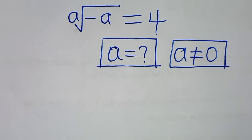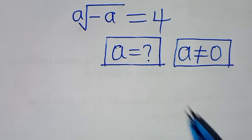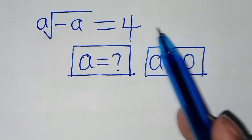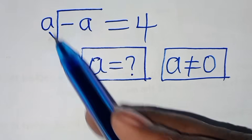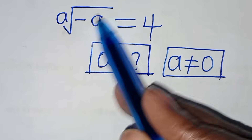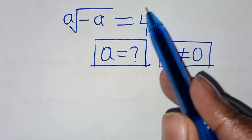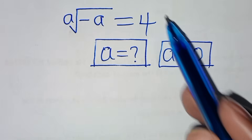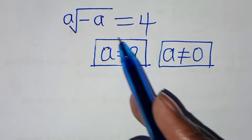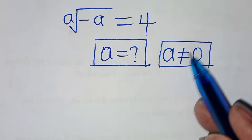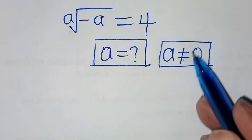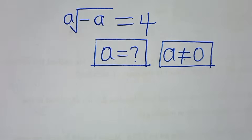Hello everyone, you are welcome to solve this nice algebra problem: the eighth root of minus a is equal to 4. What is the value of a, given that a is not equal to 0?